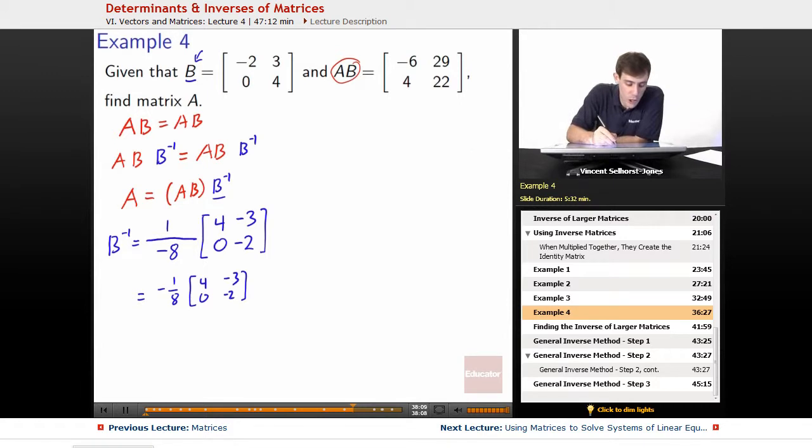So at this point, we know from what we showed here that A is equal to AB times B inverse. Well, we know AB is negative 6, 29, 4, 22.